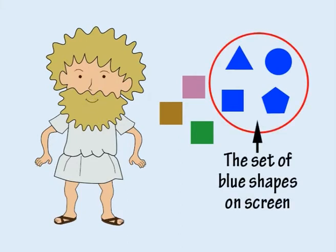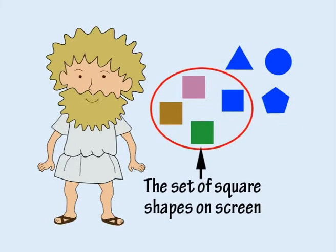For example, this is the set of blue shapes on screen. And this is the set of square shapes on screen.